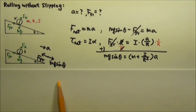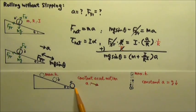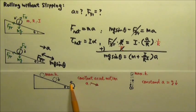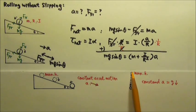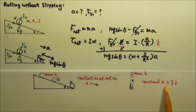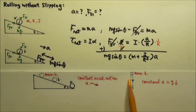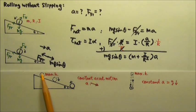Everything here is the same for rolling without slipping up or down the incline. So if something rolls without slipping up to a maximum height and then rolls without slipping back down, the entire trip has a constant acceleration — just as something tossed straight up to a maximum height and then falling back down has a constant acceleration g. For both cases, the upward trip and downward trip are symmetric: if it takes three seconds to go up, it would take three seconds to come back down.